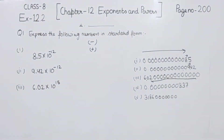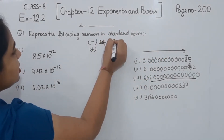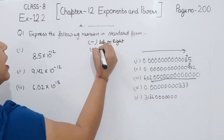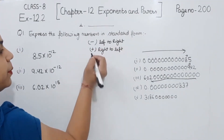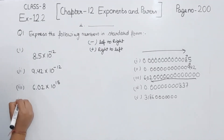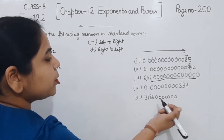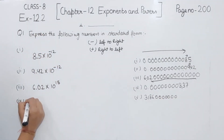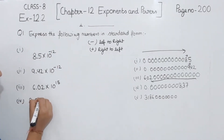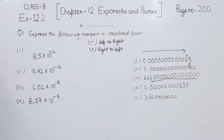So to summarize the rule: when we are shifting the decimal from left to right, the power will be negative; when we are shifting the decimal from right to left, the power will be positive. Now comes part 4. We will shift the decimal from left hand side to the right hand side here. Counting the places: 1, 2, 3, 4, 5, 6, 7, 8, and this one is 10 — so I am going to write 8.37 multiplied by 10 to the power minus 9. This is the standard form for part 4.